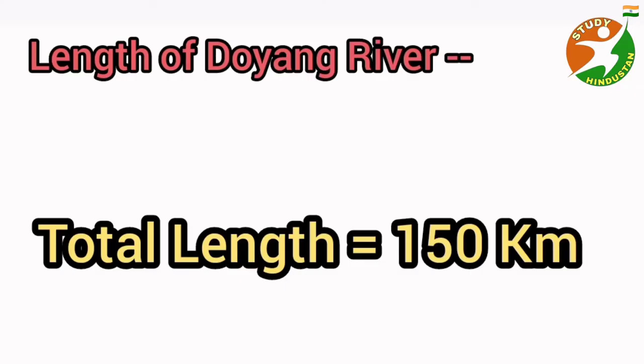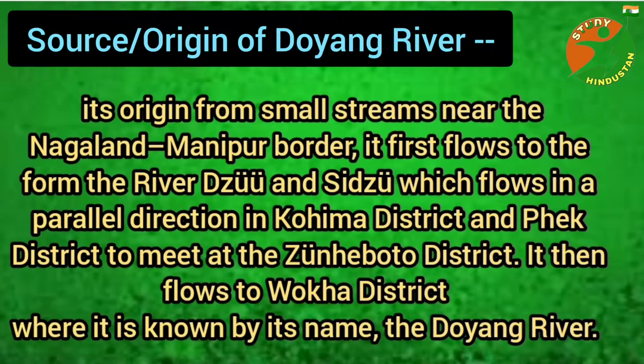Length of Doyang river: the total length of the river is 150 km. Source or origin of Doyang river: it originates from small streams near the Nagaland-Manipur border.